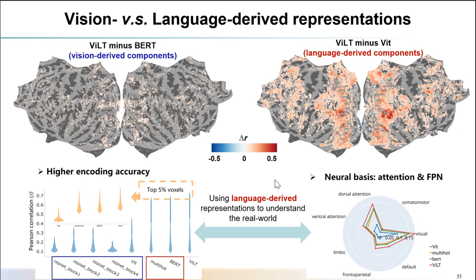The question is what are the specific contributions of vision-specific versus language-specific components. We did a direct model comparison between ViLT, BERT, and the vision transformer. We found that vision-derived components are mainly located in the visual areas but rarely in other high-order cognitive areas. On the other hand, language-derived components achieved high accuracy beyond visual areas, and mainly involved areas in the attention and frontal-parietal networks. In terms of both representation accuracy and spatial distribution, our results suggest that language-derived representation plays a critical role in our understanding of the real world.